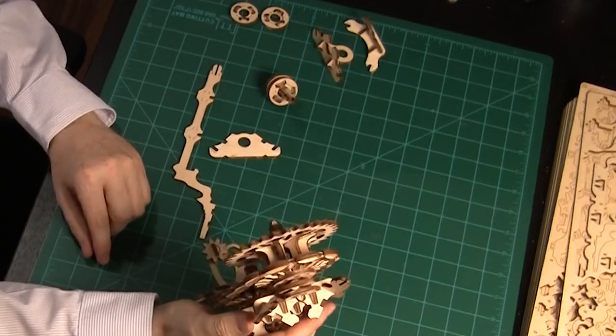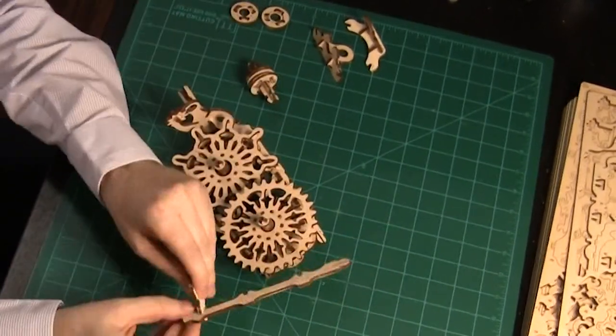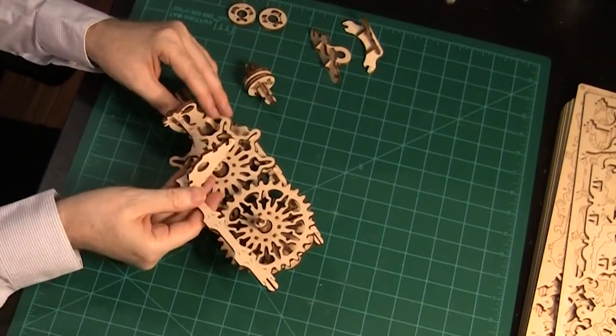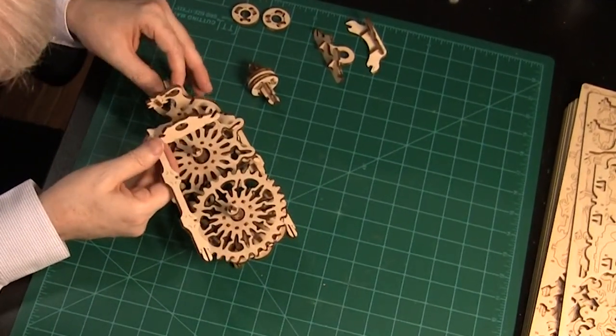Now, assemble the vertical structure on the other side. This time, Ed adds the bottom horizontal piece and gear assembly to the vertical piece before putting it in the base.